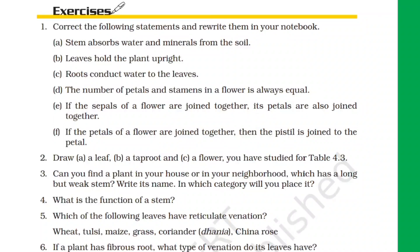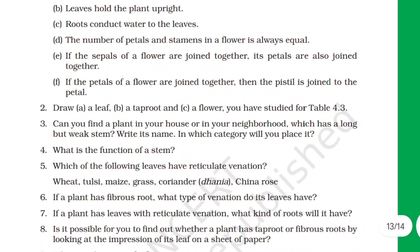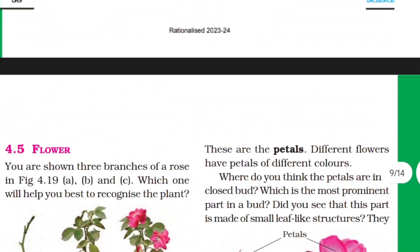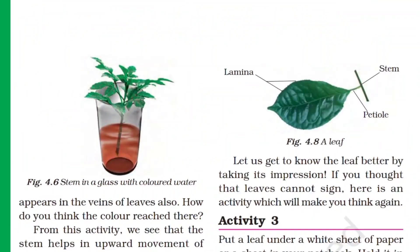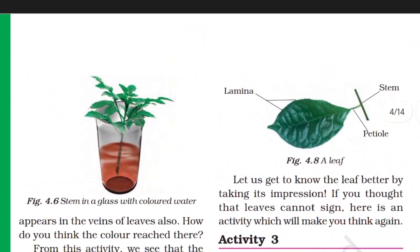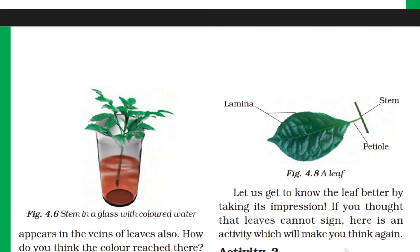The next question says draw a leaf. In diagram 4.8, a leaf is shown. We have to highlight three parts: lamina, petiole, and stem. If you can, you can also highlight the midrib and veins.